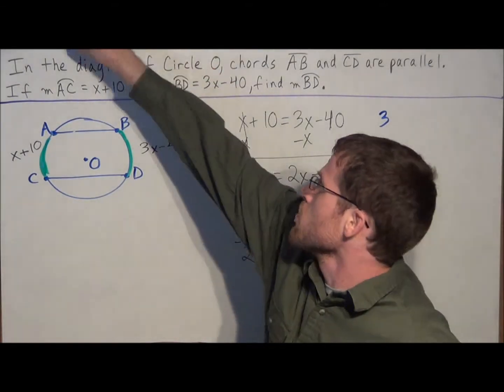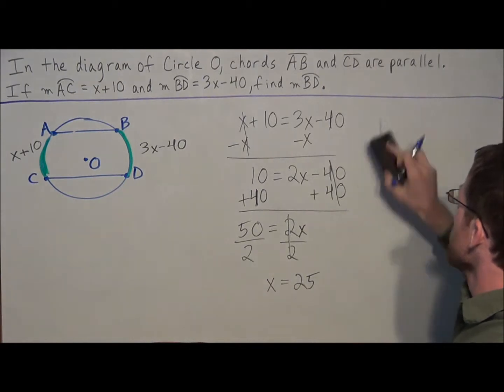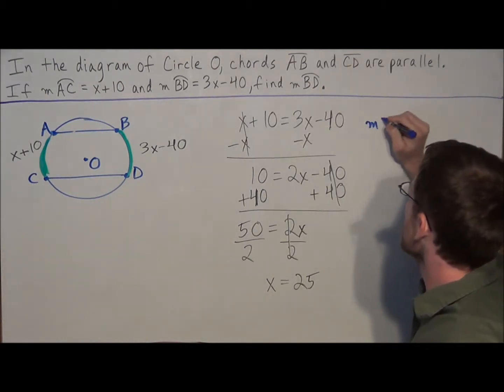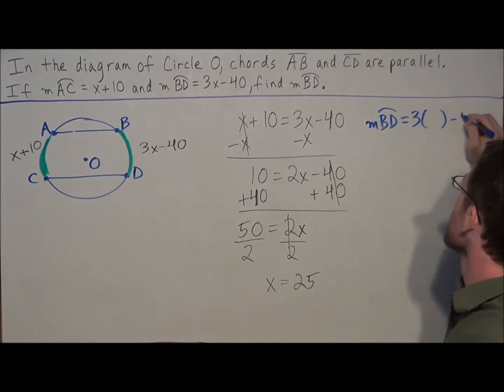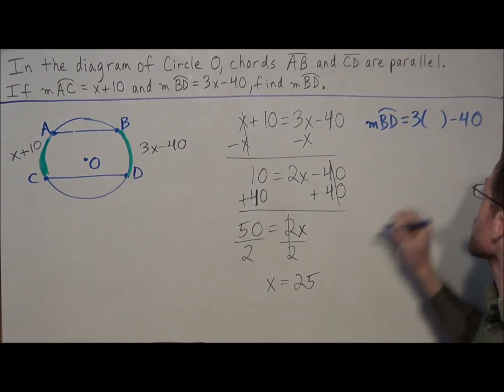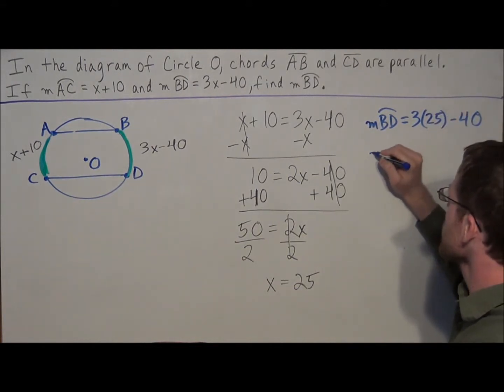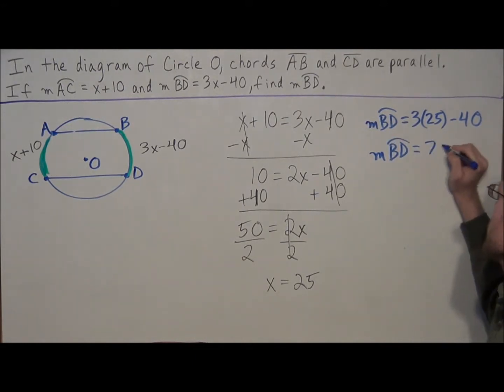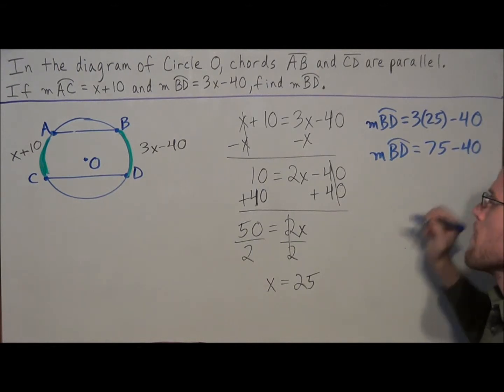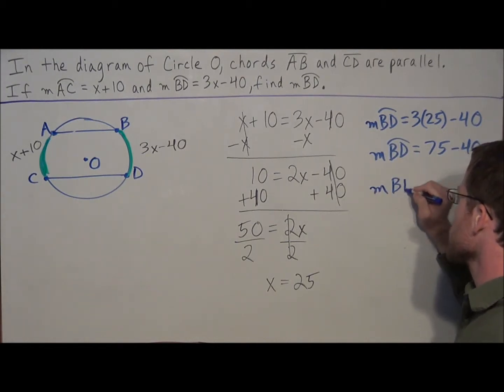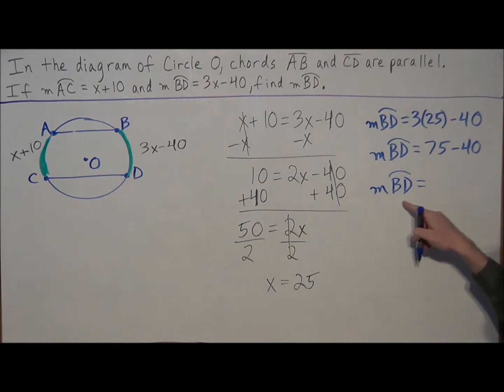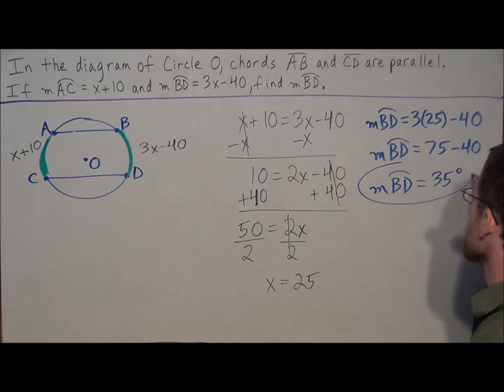So we can plug in. We know that arc BD, we'll write the whole thing out. The measure of arc BD is equal to 3x minus 40. But we just found that x is equal to 25. So we could plug in, and we have the measure of arc BD is equal to 75 minus 40. And remember, when we're talking about the measure of an arc, we always want to include the degrees. So for our final answer, when we simplify, we have the measure of arc BD is equal to 35 degrees. And this is going to be our final answer.